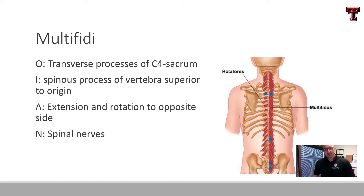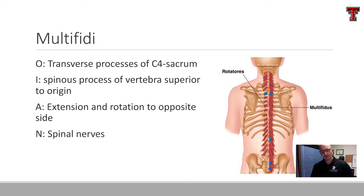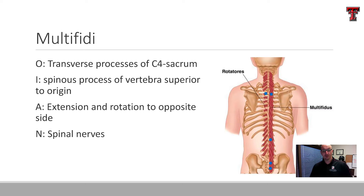Likewise, the multifidi run segment by segment, but instead of just simply being from one segment to another, the multifidi actually run at an oblique inferior-lateral arrangement. They originate on the transverse processes of C4 through C7, all 12 thoracic vertebrae, all five lumbar vertebrae, and also the sacrum. They insert into the spinous process of a vertebra that is superior to the origin. So this is going to be an extensor and a rotator to the opposite side. Like the intertransversarii, it gets its innervation from the spinal nerves.